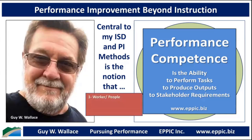Performance competence exists at the worker level, the work or workflow or processes level, at the workplace or organizational level, and at the world or societal level. The four W's is something that Roger Addison created, and it reflects our view that we should be looking beyond individual performance — looking broader. And to honor the late Roger Kaufman, who gave us the term 'mega': there's micro, there's macro, there's mega, which is looking at the impact we have on society as a whole.